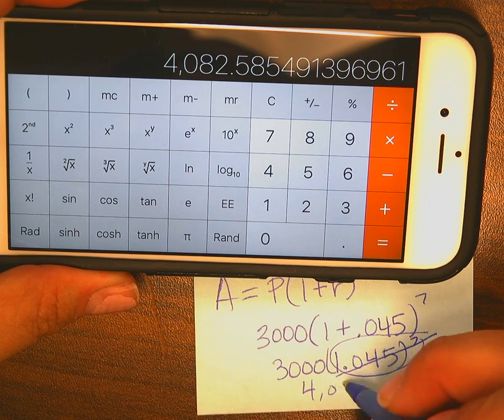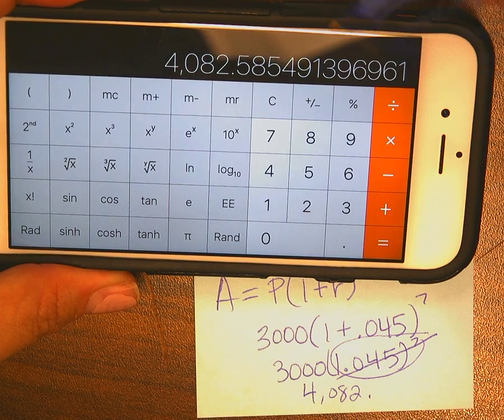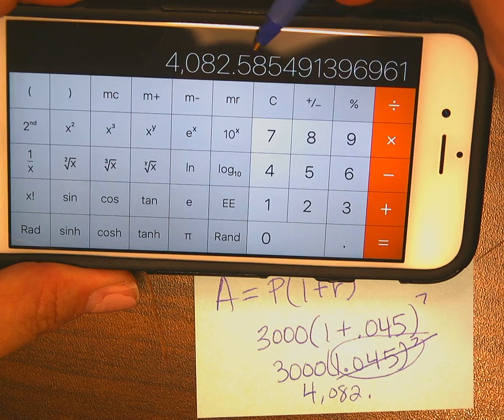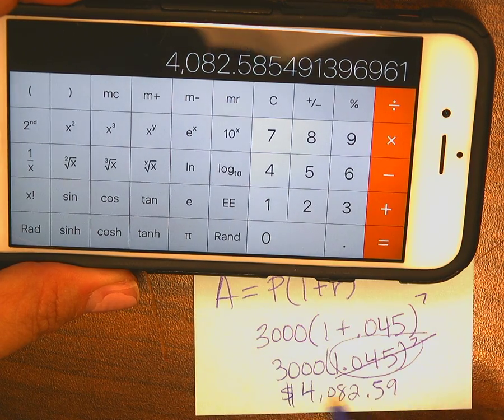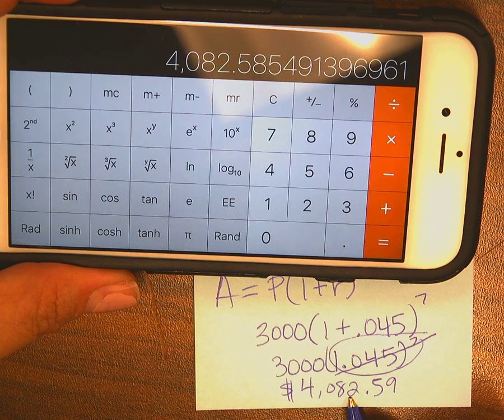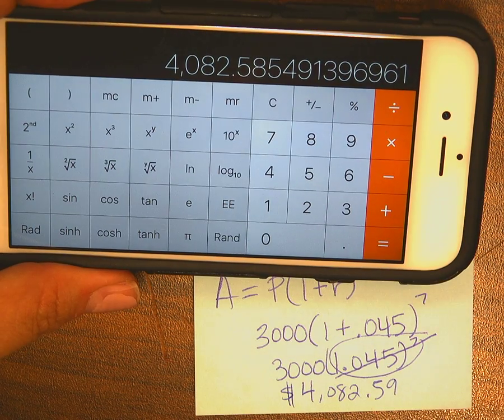This is $4,082. And because I'm rounding, that 5 tells me to change it to 59 cents. And you would put a dollar sign. This is my grand total. That's interest and principle included. Okay, hopefully that's helpful.